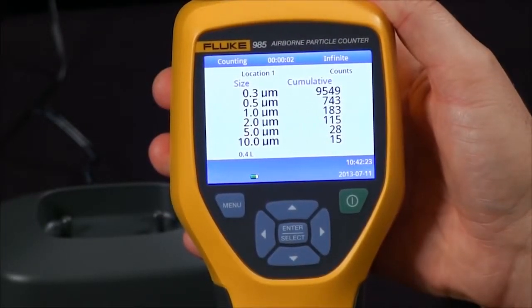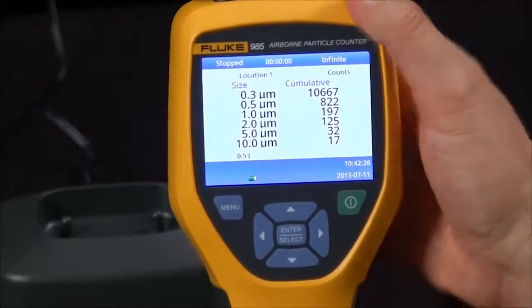Once you have your readings you can simply place the 985 particle counter in the base.